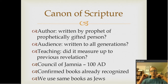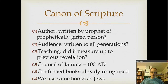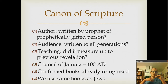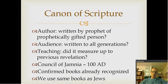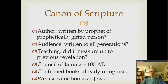The second test was audience — it had to be written to all generations. The third was teaching: did it measure up to previous revelation? If there was a contradiction in the teachings, it wouldn't have been recognized as Scripture. Officially, the books of the Old Testament were decided at the Council of Yenia around 180 AD, but it's important to note that the confirmed books were already recognized for generations before. We use the same books now in the Christian church as the Jews did.